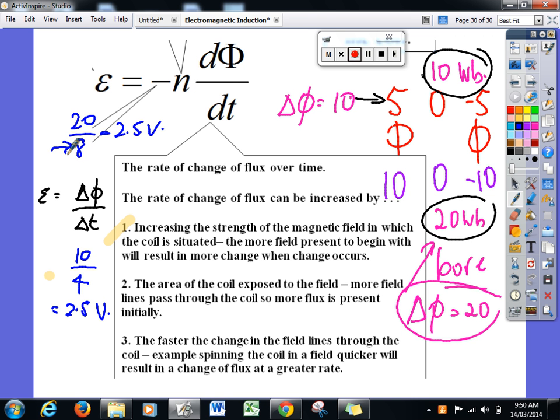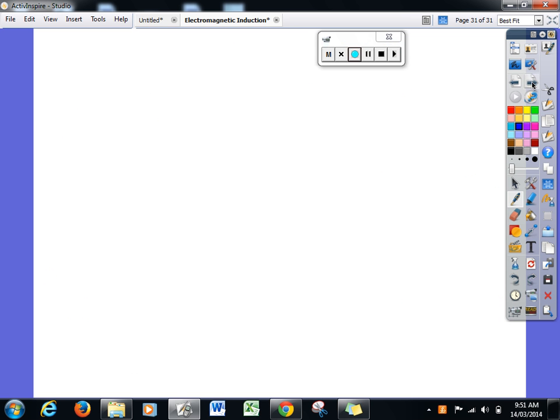So these are three different ways we can make the current be greater. Obviously we just don't do one of them, we try to do as much as we possibly can. We do two, especially number three and number one. We use strong magnets and we move them quickly. Number two is especially good as a design for the way that we use a generator, and the way we change the area of the coil exposed to the magnets is we spin the coil between the magnets, and that makes a change very, very quick, very rapidly.